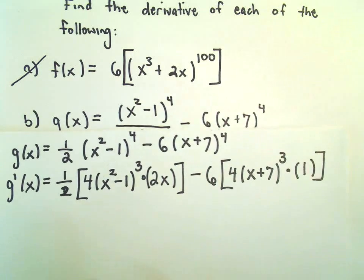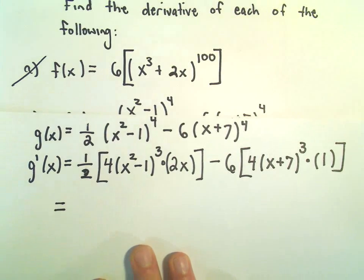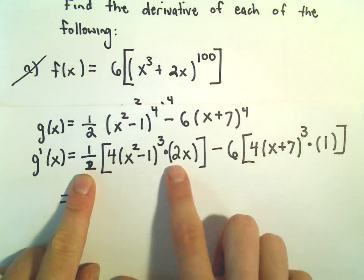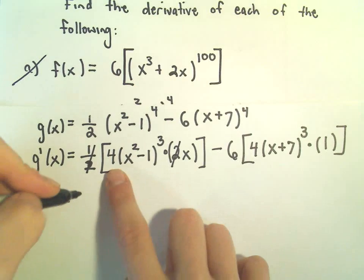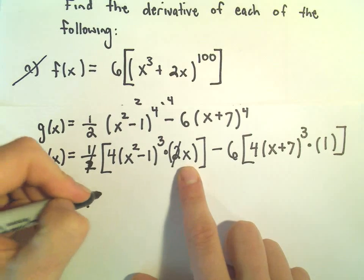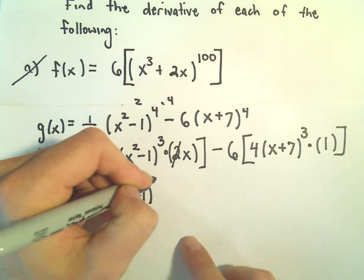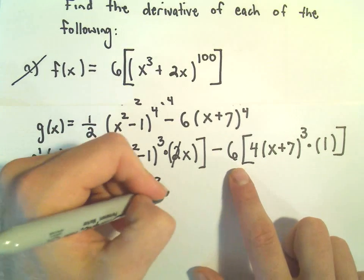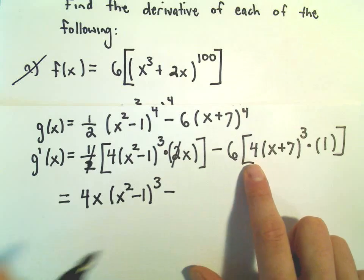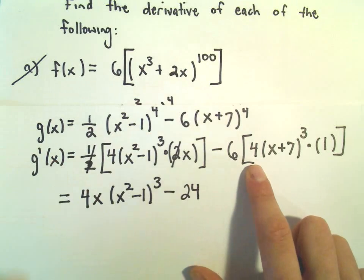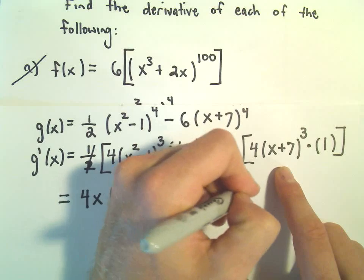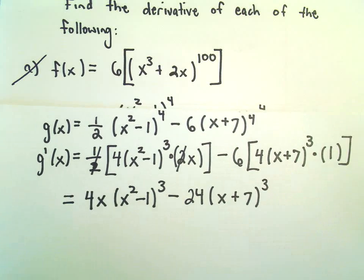So I'm going to clean this up a little bit. Notice we have a 1 half times a 2, so those will just cancel out. We're left with a 4. I'm going to write the x out front. Then we have x squared minus 1 cubed. And then on our second term, we have 6 times 4, which will give us 24. And then we would be left with x plus 7 raised to the third power.